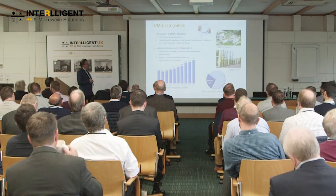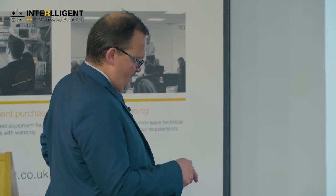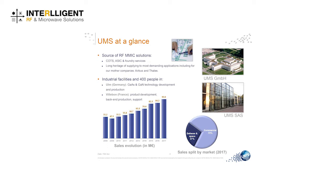We have two industrial facilities and about 400 people. The wafer fab is based in Germany where we develop technologies — 3-5 technologies — and in Villebon near Paris we have product development, back-end production, support, and all other activities. Because of our two parent companies, the core strategic business is about defense and space, but actually the commercial part is the main part — about 73% — and defense and space is about 20-27%.